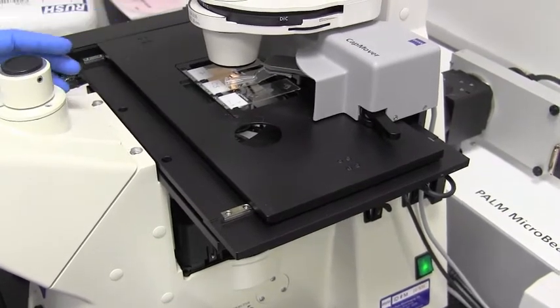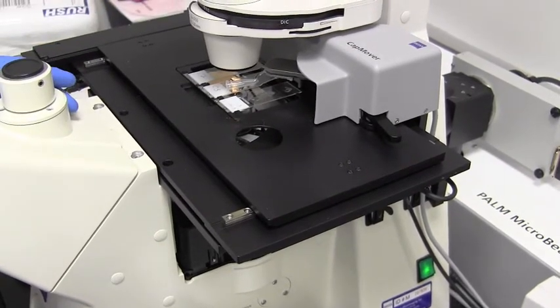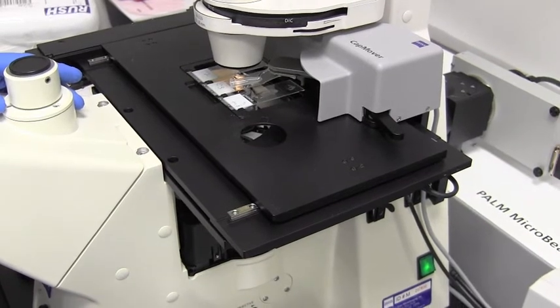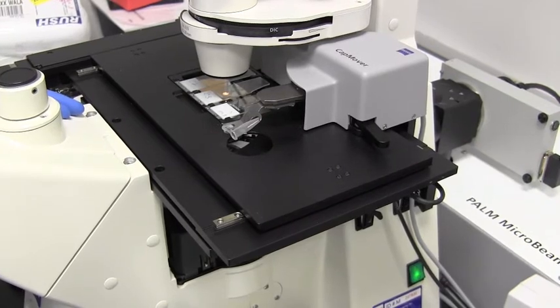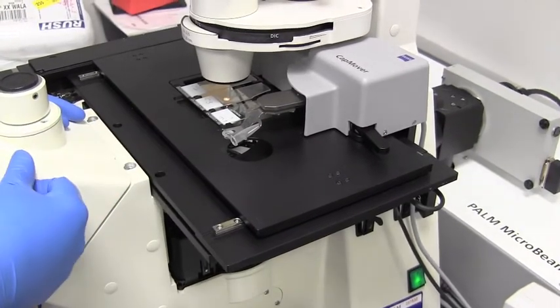So what that does is it moves the cap over the actual cells that we're looking at. Now if this is an opaque cap, you wouldn't be able to see through it. So that's why we're using clear for this demonstration. Once you're done your launching, you hold the red button down on the right again, and it moves it out of place.